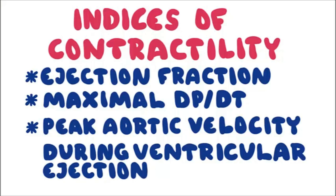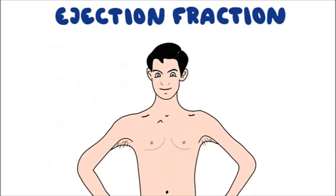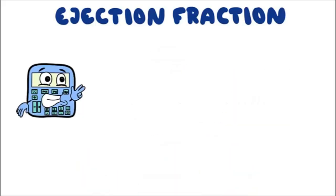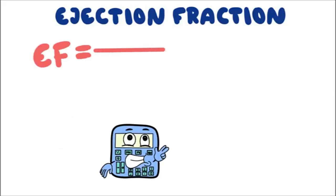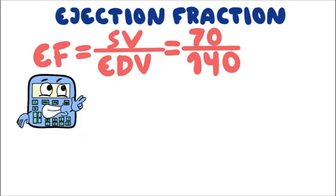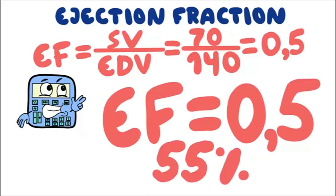There is no ideal index of contractility, but in clinical practice the best index used is ejection fraction. Ejection fraction is the fraction of ventricular volume ejected during systole. It is calculated as: ejection fraction equals stroke volume divided by end diastolic volume. Stroke volume under resting conditions is 70 mL and end diastolic volume is 140 mL, giving 0.5, or 55% in percentage terms. Down to 39% is considered normal, but not below 39%.